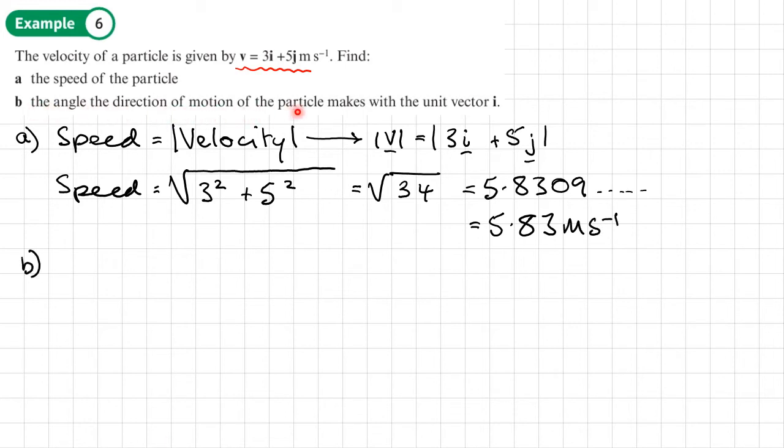Part B, the angle and direction of motion the particle makes with the unit vector i. We're going to need to draw a sketch of this. We'll do our x and y-axes. We know that the unit vector i goes here, and the unit vector j goes there. We want 3 across and 5 up, so this is where it goes. This is the vector. We want the angle the vector makes with the unit vector i, which is this way. This is the angle that we need to find here.